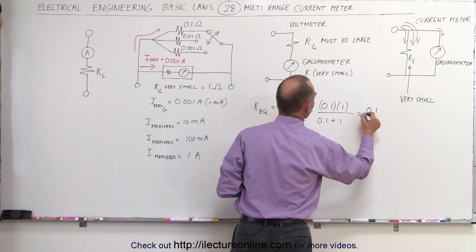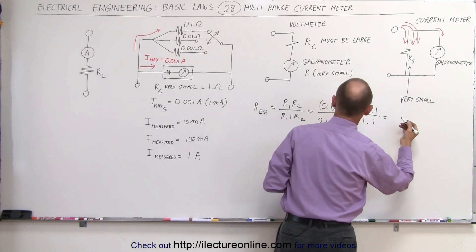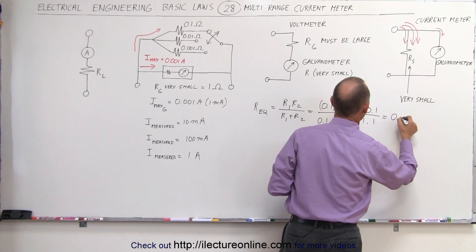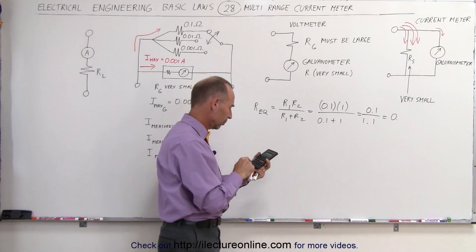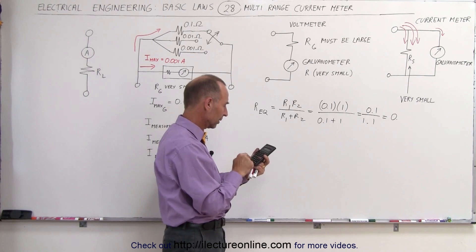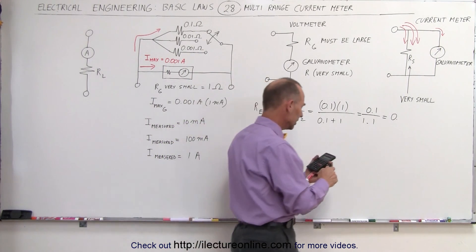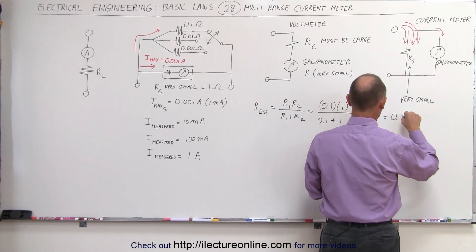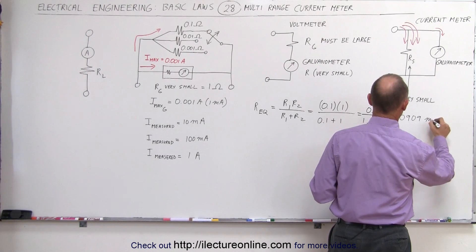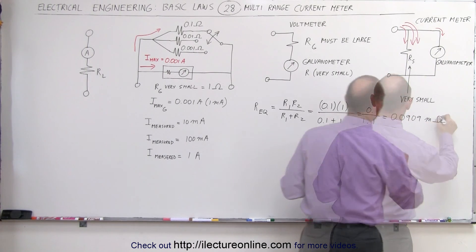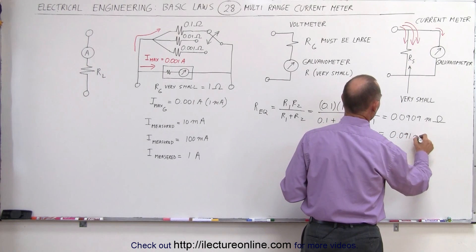This is equal to 0.1 divided by 1.1, which is equal to, that's about 0.0909, which is approximately 0.0909 milli-ohms.